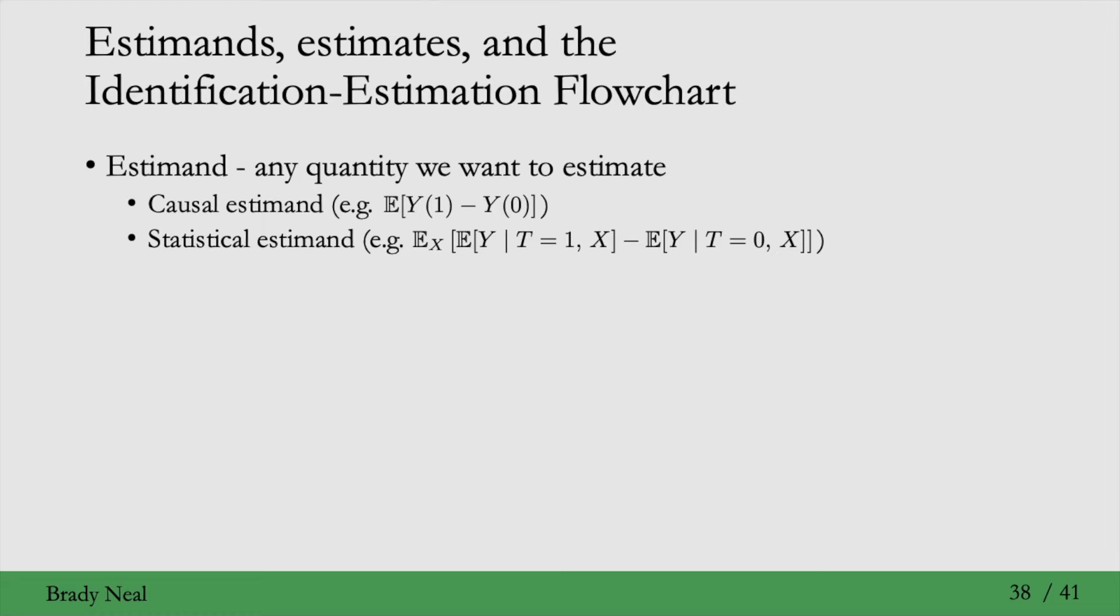So it goes from the ATE, a Causal Estimand, to this quantity right here, which is a Statistical Estimand, because it doesn't have any potential outcomes in it. And we can actually estimate statistical quantities from data, unlike Causal Quantities.